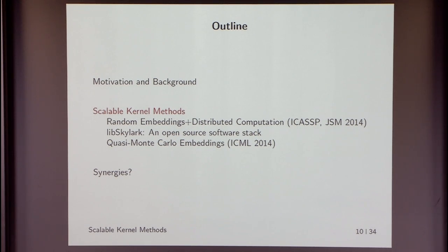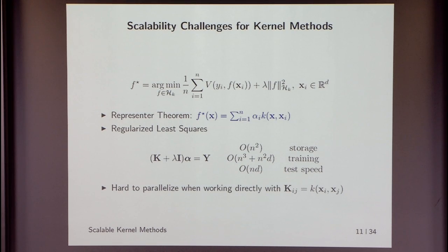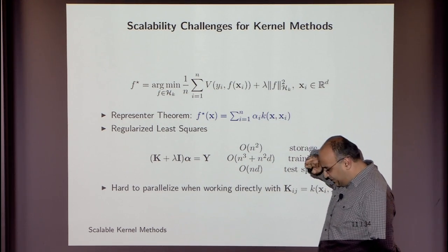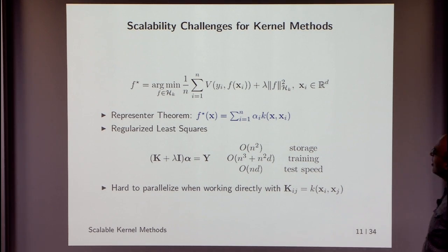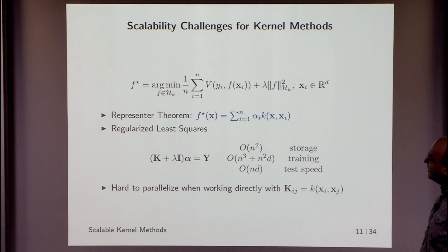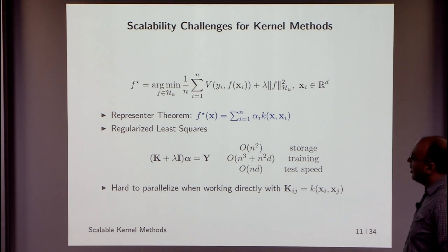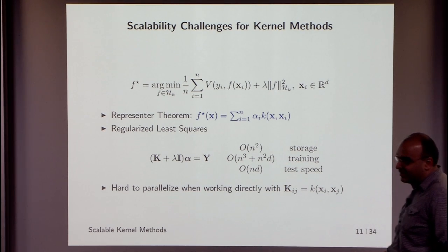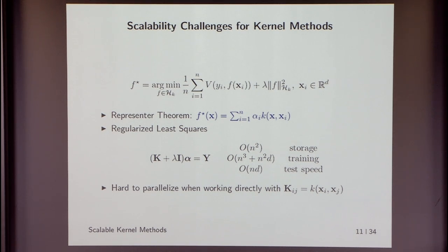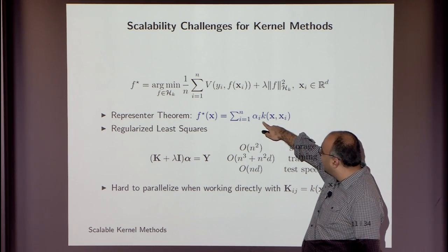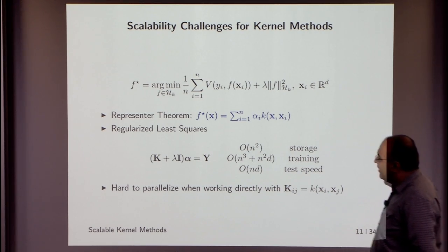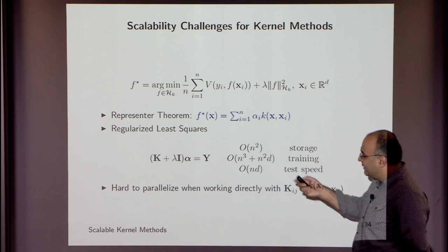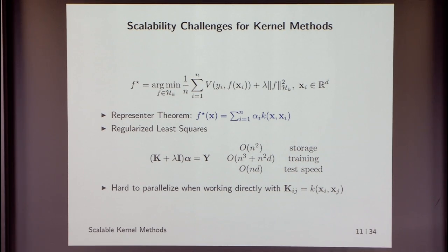Now for the more technical part — scalable kernel methods. We have this regularized risk minimization problem where the regularizer comes from the RKHS norm. Given a chosen kernel k, this is an infinite-dimensional optimization problem. The properties of the RKHS imply that the optimal function will be a linear combination of kernels centered on the training points. For the squared loss, you can plug this back in and turn it into a finite-dimensional problem: solving a dense linear system where k is the Gram matrix of the kernel.